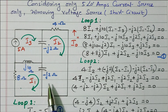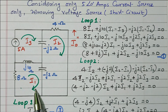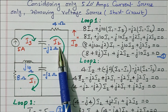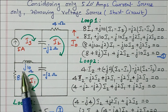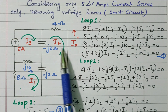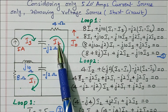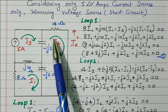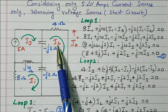We define three loops. The first loop has current I1, the second loop has current I2, and the third loop has current I3. Our aim is to find I2, because I₀ double dash is equal to I2 — the current flowing through the required network branch.